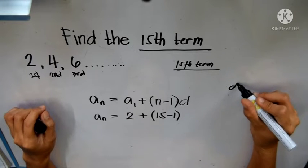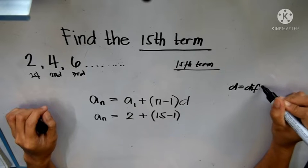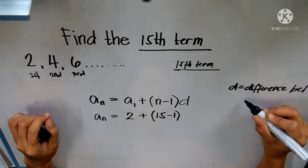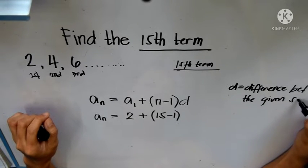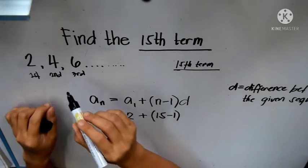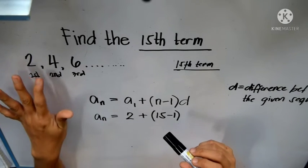d is the difference between the given sequence. Let's have a look at our sequence 2, 4, 6. If you can notice the difference between each number is 2.